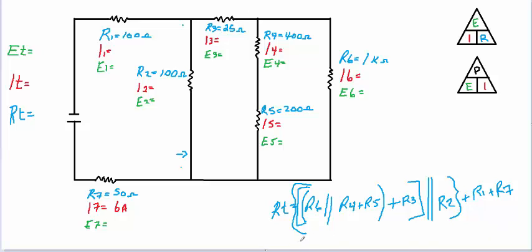So resistor 6 is 1000 ohms, and that's in parallel with the sum of resistor 4 and 5, which is 400 plus 200. So now we have 1000 in parallel with 600, which gives us 375. We then add on resistor 3, which is 25 ohms, giving us 400. And that 400 is in parallel with resistor 2, which is 100 ohms.